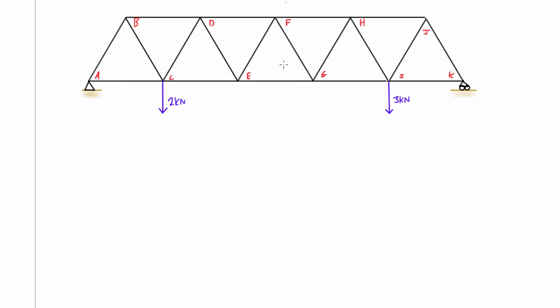The first thing that we do is we want to take a virtual cut and separate our truss into two sides. We want to make sure that our cut is passing through the member in question and also that it's only passing through a maximum of three members because in 2D statics problems we have a maximum of three unknowns.